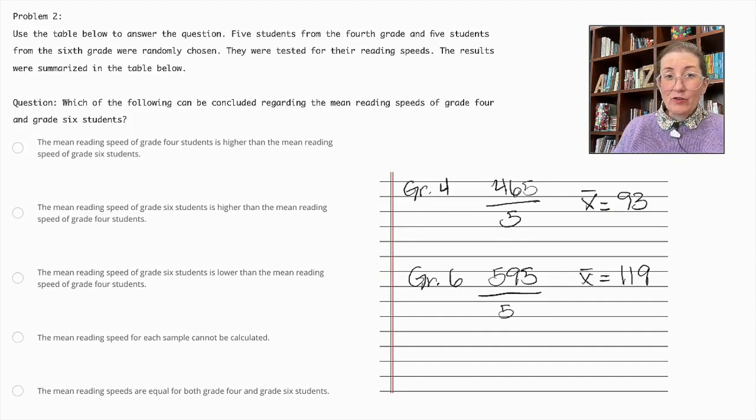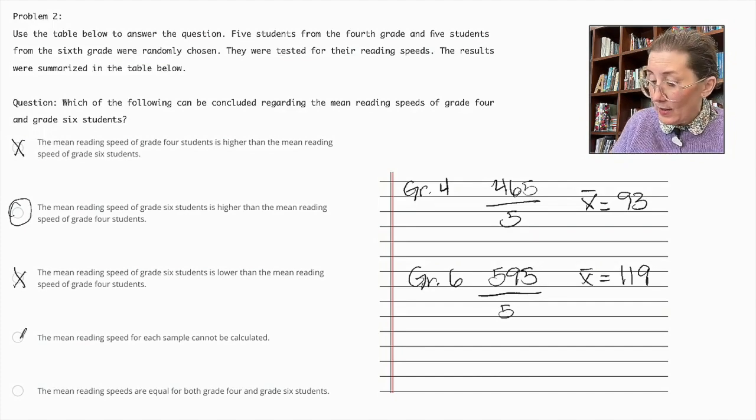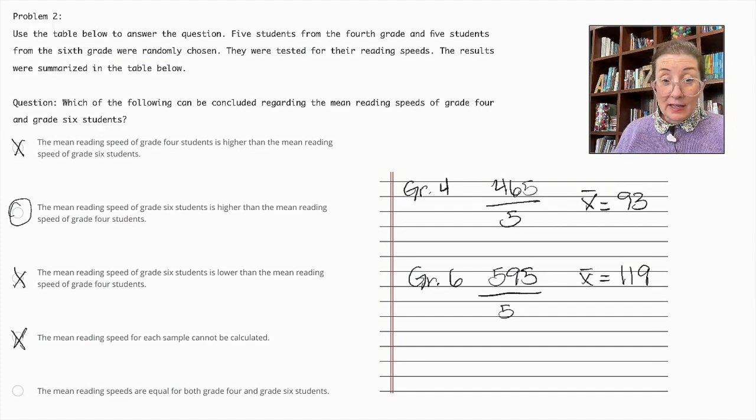The mean reading speed for grade 4 students is higher than the mean reading speed of grade 6 students. That is not correct. The mean reading speed for grade 6 students is higher than the mean reading speed of grade 4 students. That is correct. Let's put a circle on it just in case there's an even better answer! The mean reading speed of grade 6 students is lower than the mean reading speed of grade 4 students, and that's not correct. The mean reading speed for each sample cannot be calculated, and that is incorrect as well. The mean reading speeds are equal for both grades, and that is not correct. So, this is in fact the correct answer.